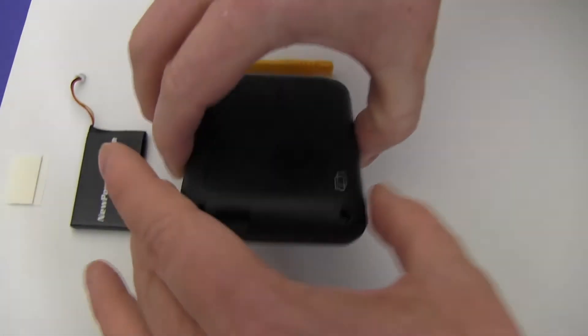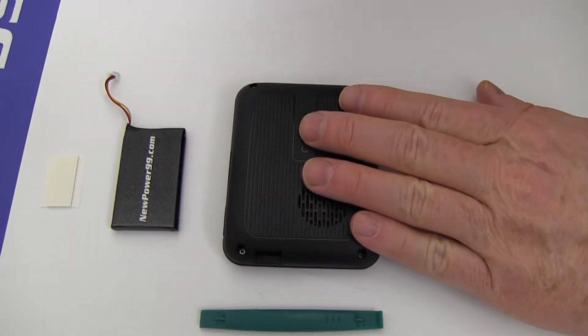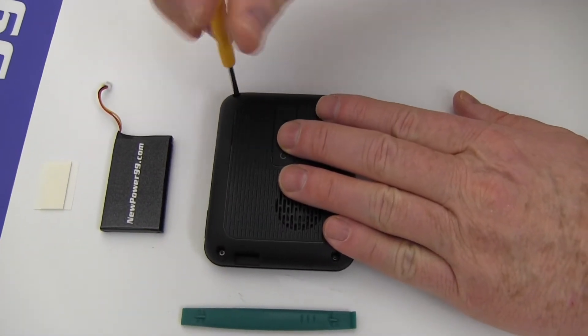Begin by removing the four screws on the back of your Garmin using the special tool provided in your kit from NewPower99.com.